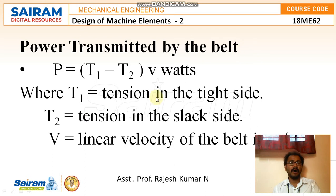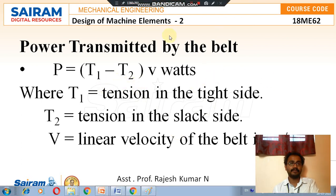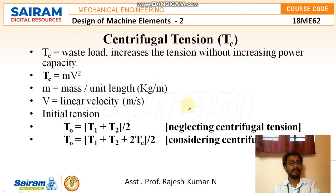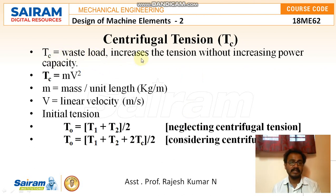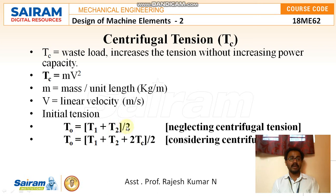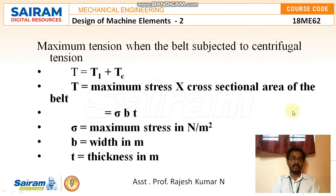Power transferred by the belt is P = (T1 − T2) × V, where T1 is tension on the tight side, T2 is tension on the slack side, and V is the linear velocity of the belt in meters per second. Centrifugal tension Tc = mv², where m is mass per unit length (kg/m) and V is linear velocity. It is a waste load that increases tension without increasing power capacity. Initial tension T0 = (T1 + T2)/2, neglecting centrifugal tension. Considering centrifugal tension: T0 = (T1 + T2 + 2Tc)/2. Maximum tension T = T1 + Tc = σ × B × t, where σ is maximum stress, B is width, and t is thickness.